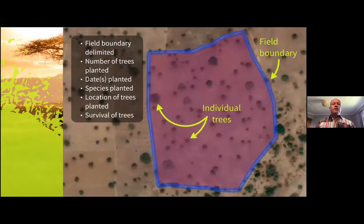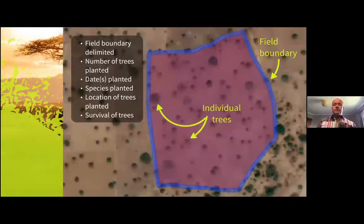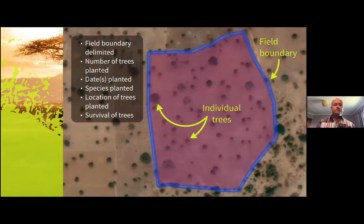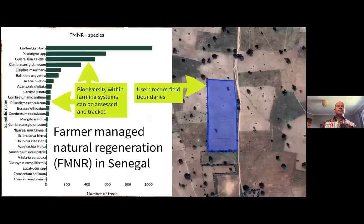In the app, users also delineate their field boundaries, and then record the number of trees planted and the locations of the trees, as you can see on the map here. We also track survival of the trees. We have this information not only as summary statistics but in a spatially explicit way for each individual field.